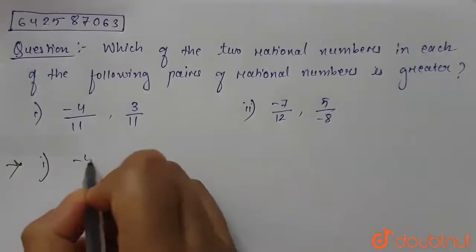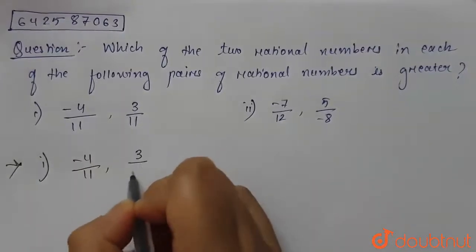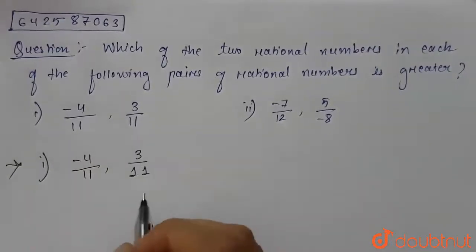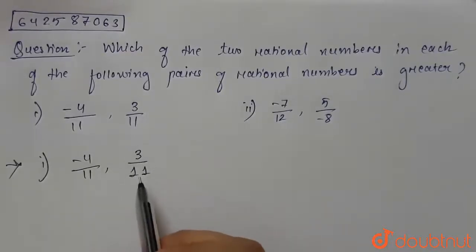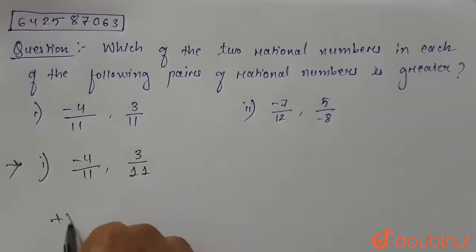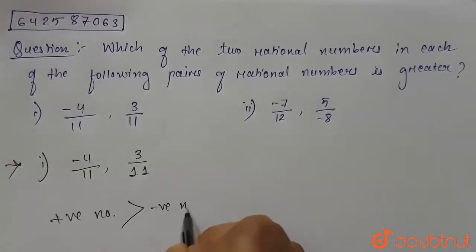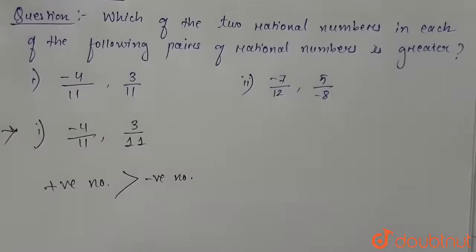So the first pair is given as -4/11 and 3/11. We can clearly see that one number is negative here and the other rational number is positive. Now we know that a positive number is always greater than a negative number, so therefore we can say that 3/11 will be greater than -4/11.